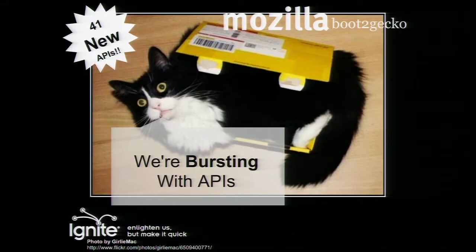We have new APIs. At the moment we have about 41. Some of them will go away, some of them will be merged and become better, and some of them are in different stages of planning and development.